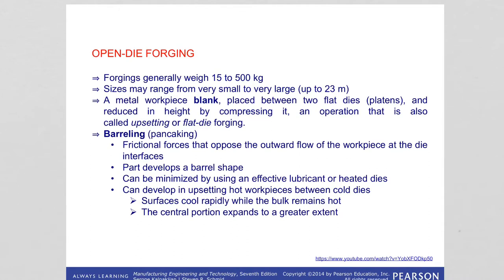Barreling can be minimized if you use a lubricant or if you heat the die, which also reduces friction. The reason is that when you upset a hot workpiece between cold dies, the workpiece cools rapidly at the surface while the bulk remains hot, so the interior flows more easily than the surfaces — also resulting in barreling. Increasing the temperature of the dies helps prevent barreling.